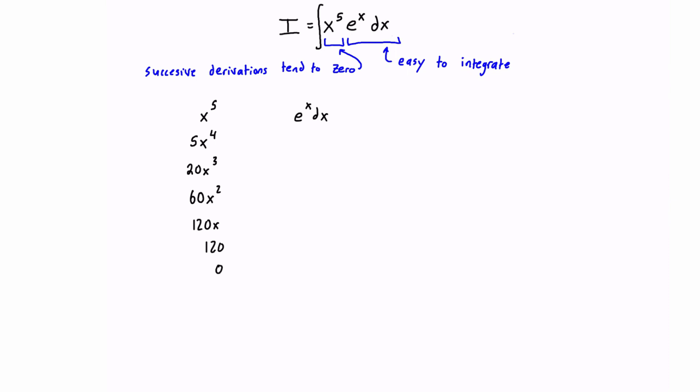Then we're just going to successively integrate the other part. So the integral of e to the x is just e to the x, and the integral of e to the x is just e to the x, and so forth. In this case you can just ignore the integration constant for now, as long as you remember to put it back in at the end of the problem.